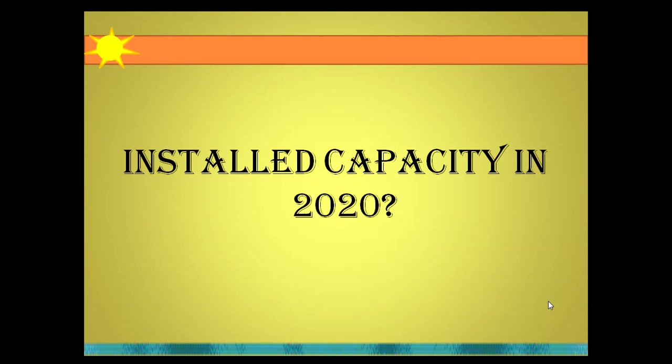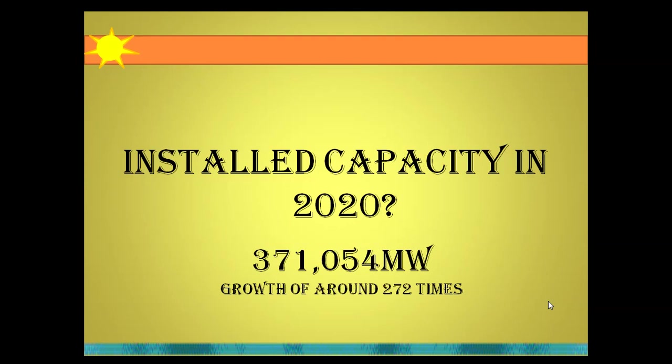The installed capacity in 2020 is 371 gigawatts — you'll be amazed to see how much it has grown. The power sector has grown by almost 272 times since independence.